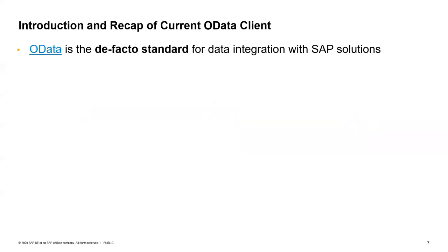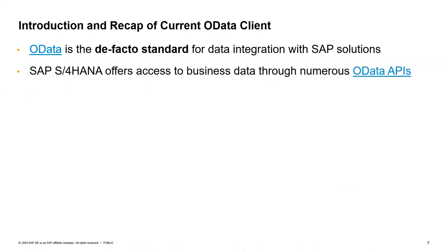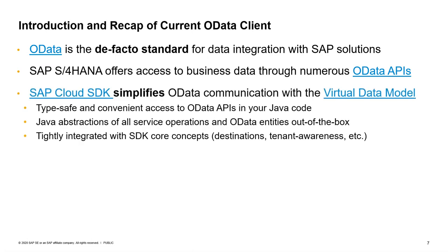OData — Open Data — is the de facto standard for data integration with SAP solutions. S/4HANA offers access to its business data through numerous OData APIs described on the SAP API Business Hub. The role of the SAP Cloud SDK is that it simplifies OData communication with SAP solutions through the so-called virtual data model, giving you type-safe and convenient access to the OData APIs in your Java code.